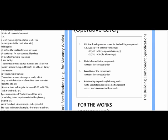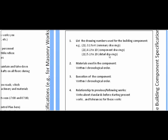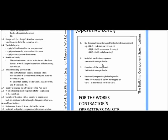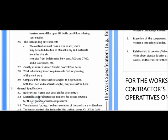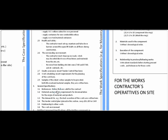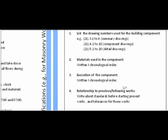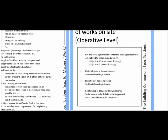This is the actual build-up of the building component specification, and it's designed for people working on the building site. In reality, you shouldn't mention norms and standards in detail here, because site workers don't have a detailed understanding of them. Those references belong in the work specifications under the norms and references section. Don't mention norms in the building component specification — even though some examples do, it's actually incorrect.